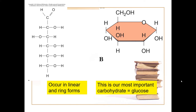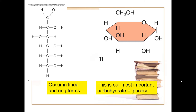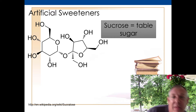One important thing about the ring form of glucose is three-dimensional shape. The ring is kind of a plane, but molecules attached to those carbons can stick up or stick below. Some molecules are on top of the ring and some stick down on the bottom. If one of those hydroxyls flips from the bottom to the top of the ring, that's a completely different molecule with completely different chemical properties.